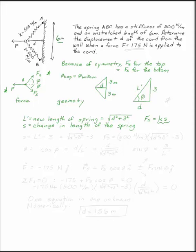Fs has to be a positive number. Otherwise, our whole free body diagram is accelerating to the left at warp speed. So if F is equal to Ks, remember we're only dealing with half of the spring right here. We've got Fs on the top and Fs on the bottom. S is going to be the new length of the spring minus the original length of the spring, which was 3. That's half the spring ABC.